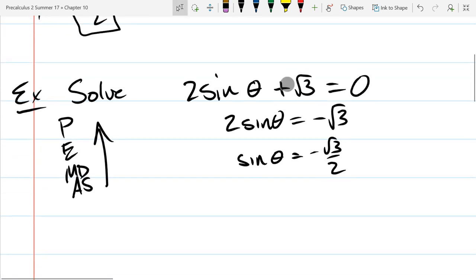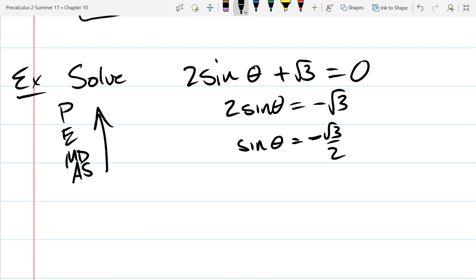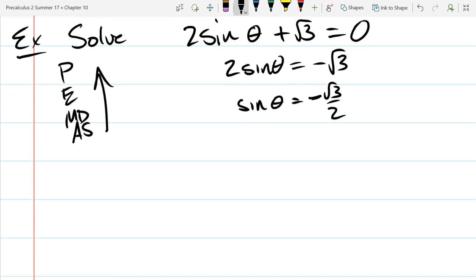Now we have to figure out what theta values, when you take sine of it, gives you negative square root three over two. I like to think about this in a geometrical sense.